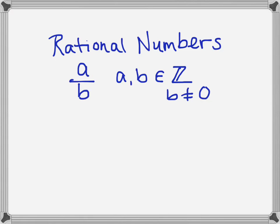If we had a fraction with a denominator of zero, that number would not be a real number, so we just want to consider fractions that are real numbers. Some examples would be things like two-thirds or negative one-eighths, and even things like five, because five could be written as five over one.